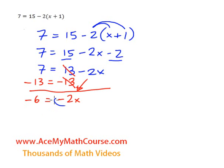We're still stuck with the negative 2. So we can actually divide both sides by negative 2. Because right now, the negative 2 is multiplying the x.